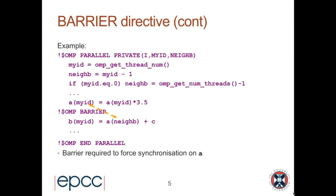One use case for an explicit barrier is with the master directive. The master directive marks code executed only by thread zero, and unlike single, it does not have an implicit barrier at the end. So if you want all other threads to wait while thread zero executes the master region, you need to code an explicit barrier after the master construct. That's one use case. Let's look at another slightly contrived example.